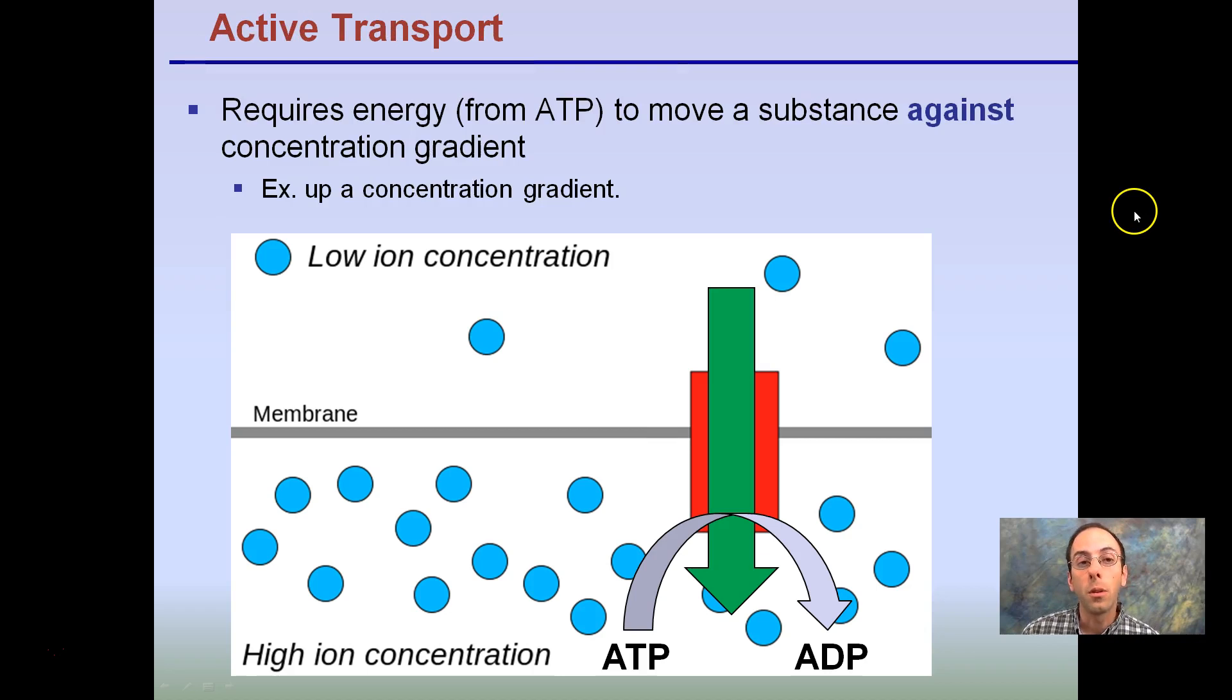Starting first with active transport. Remember, this requires energy from ATP, adenosine triphosphate, to move substances against the concentration gradient. An example of this is up the concentration gradient. So what this looks like here is, if we look at our membrane and we have a high ion concentration here, and a low ion concentration up here.